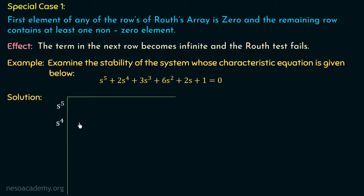After the constant term 1, we are not having any further terms, so the rest of the entries in these two rows will be 0. We have completed these two rows. Moving on to the third row, which is the row of s³, the first element will be (2×3 − 1×6)/2, which is (6 − 6)/2, equal to 0.